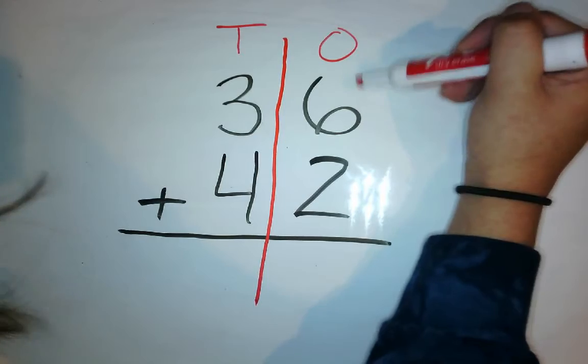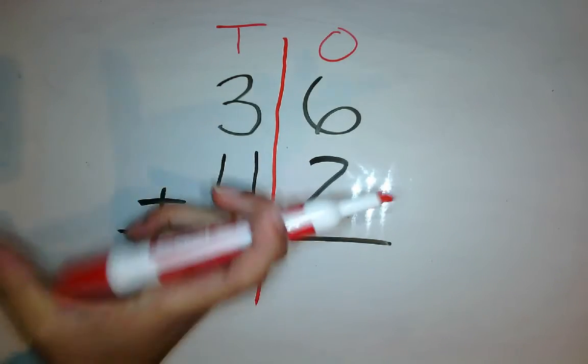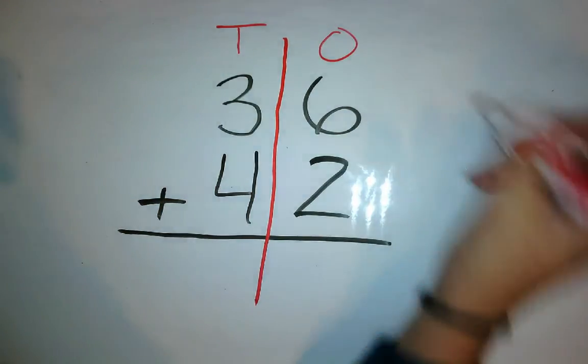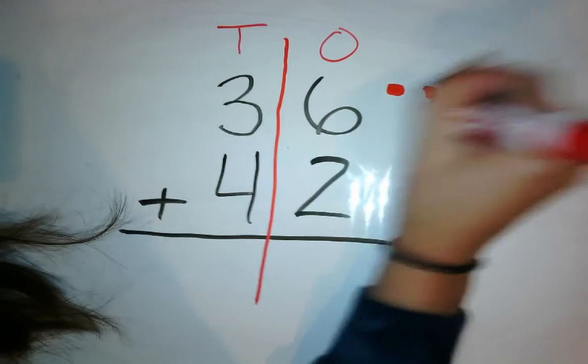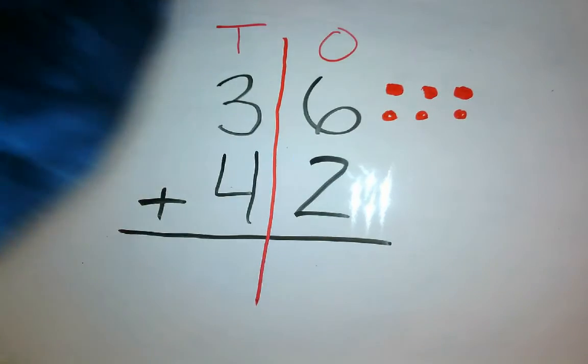Now I'm going to make my pictures using my 2 different colored markers. So I'm going to make 6 dots up here. 1, 2, 3, 4, 5, 6.